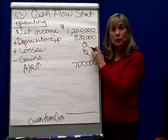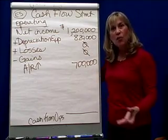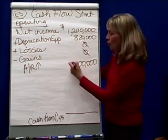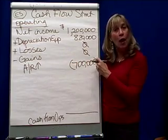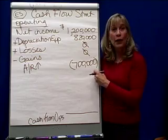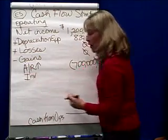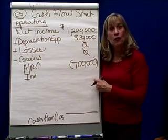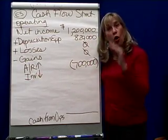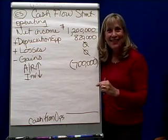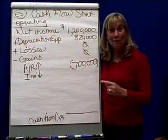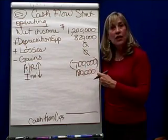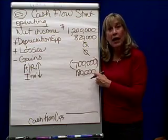We're going to either add or subtract that change. If accounts receivable went up, that means customers gave you a credit instead of cash — so you don't have the money yet, and you deduct it. The next current asset is inventory, which started at $1,020,000 and ended at $840,000, so inventory went down by $180,000. If a current asset decreases, that means you sold it and got cash, so I'm going to add the $180,000 change.